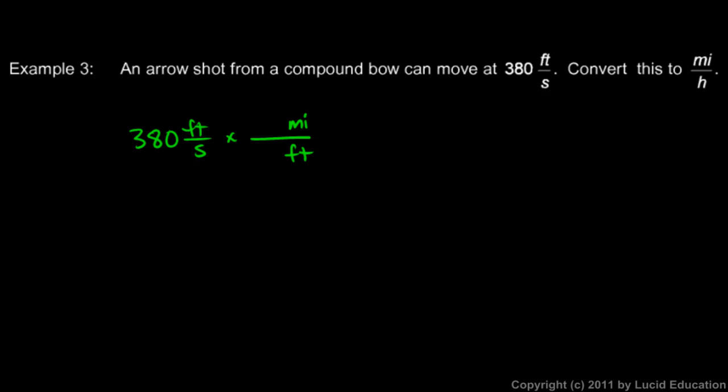So how many miles is equal to how many feet? Well, I know that one mile is equal to 5,280 feet. So down on the bottom, let's write 5,280 feet. Okay, now if I stopped there, what I'm left with is miles per second.